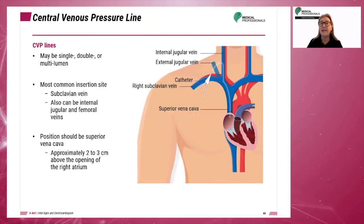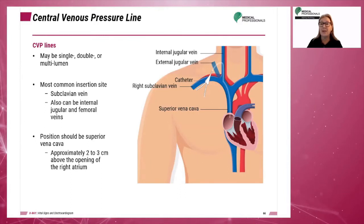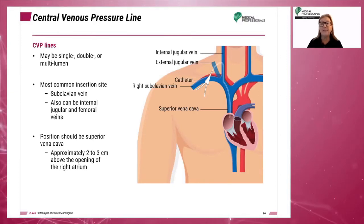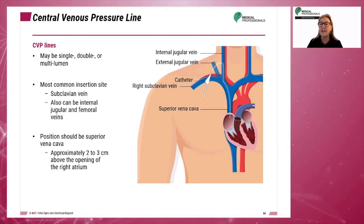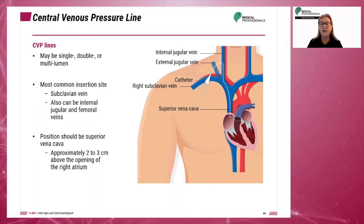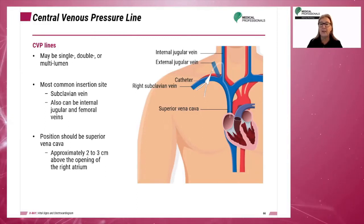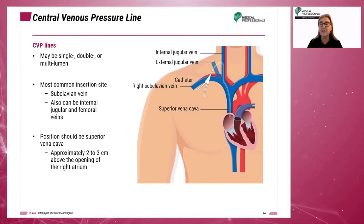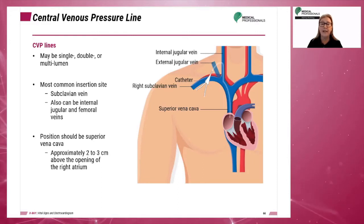The catheter can be single, double, or multi-lumen. It is inserted into the subclavian vein, internal jugular, or femoral veins, with the tip advanced to the superior vena cava. The most common site for insertion is the subclavian vein. The final position should be approximately 2 to 3 centimeters above the opening of the right atrium.